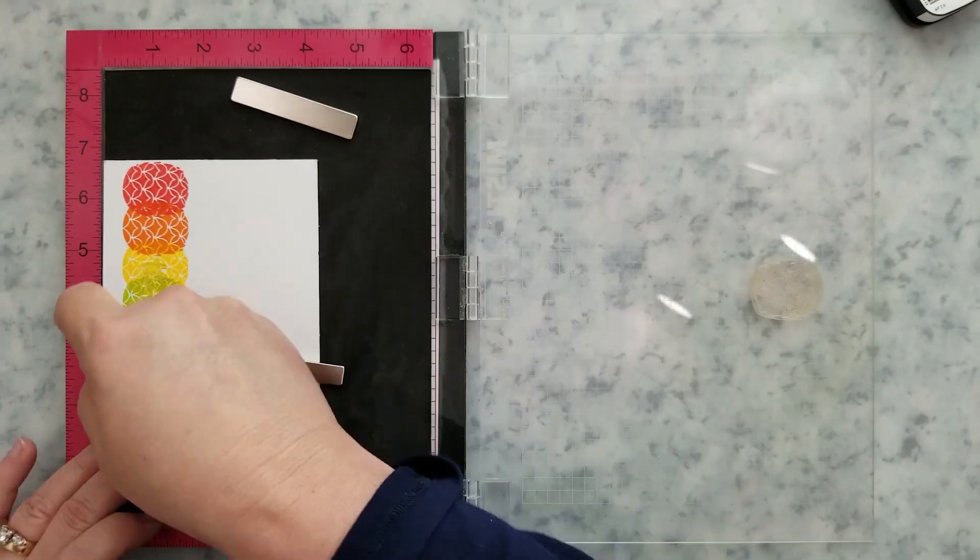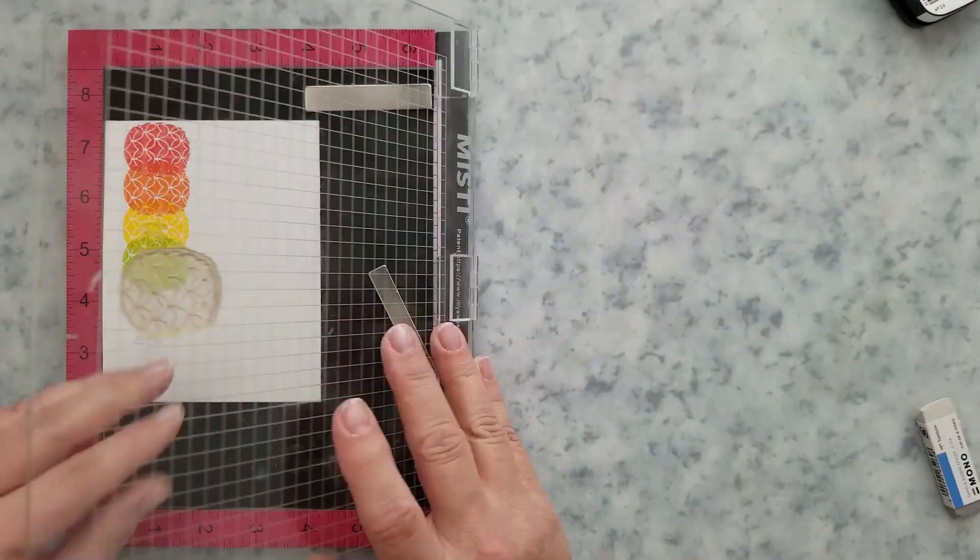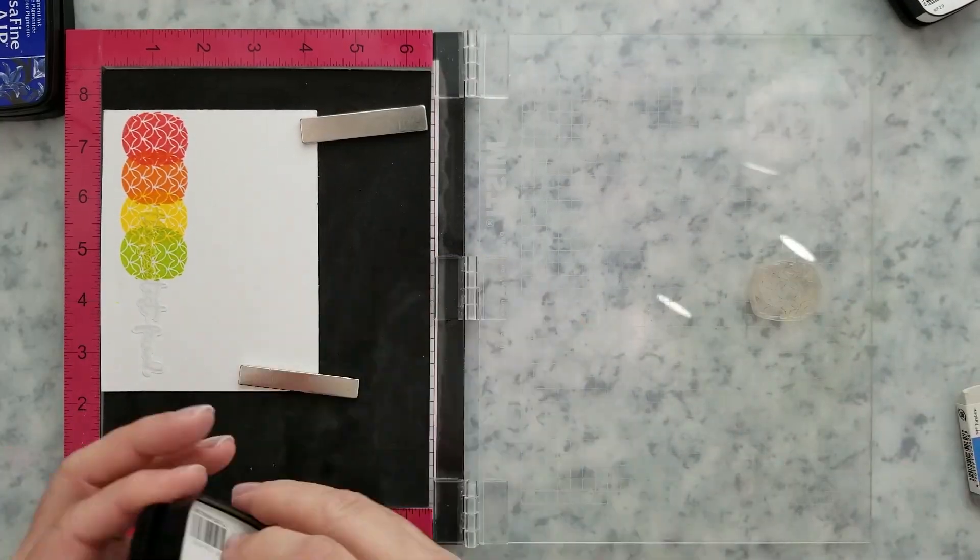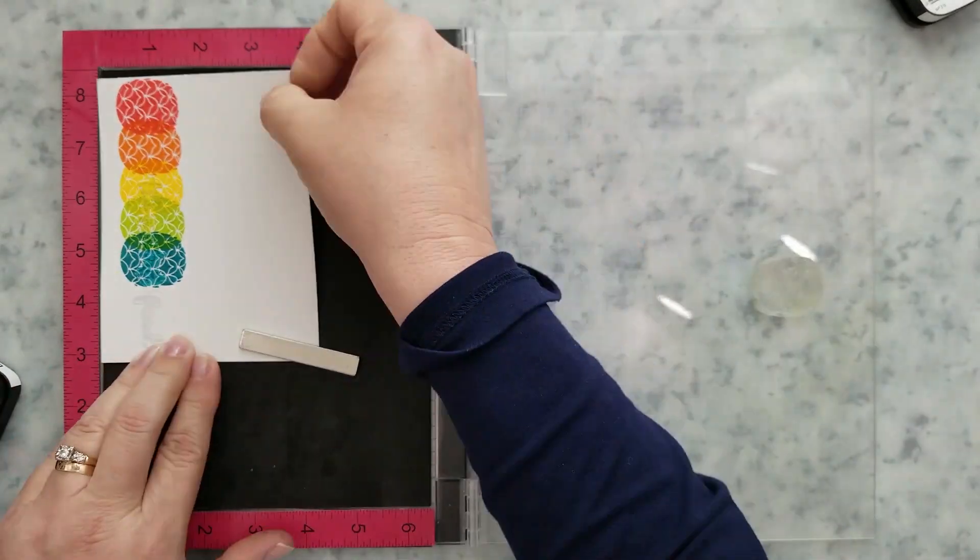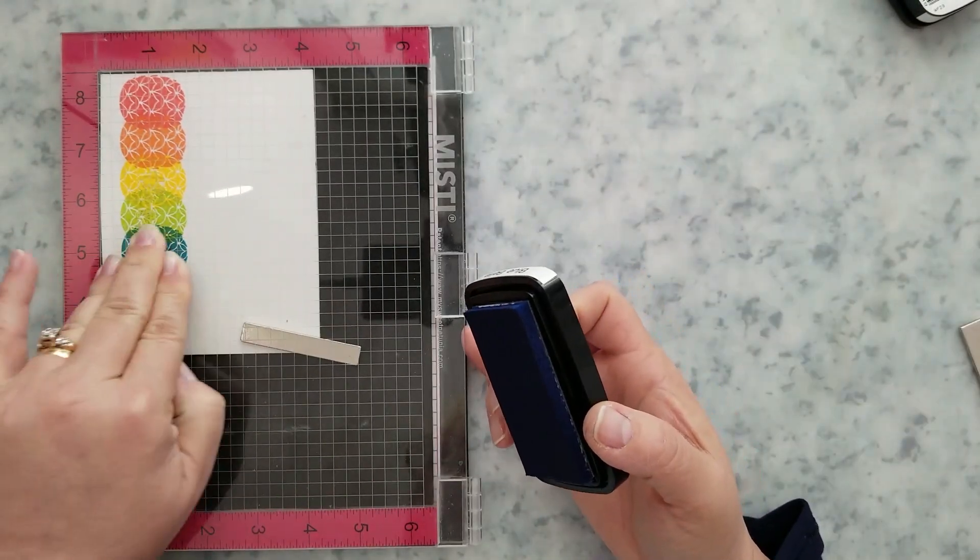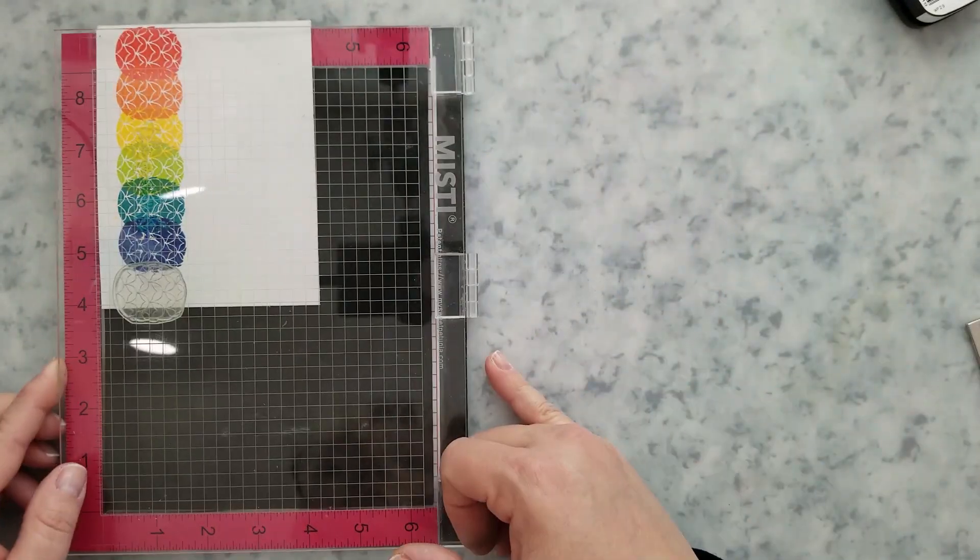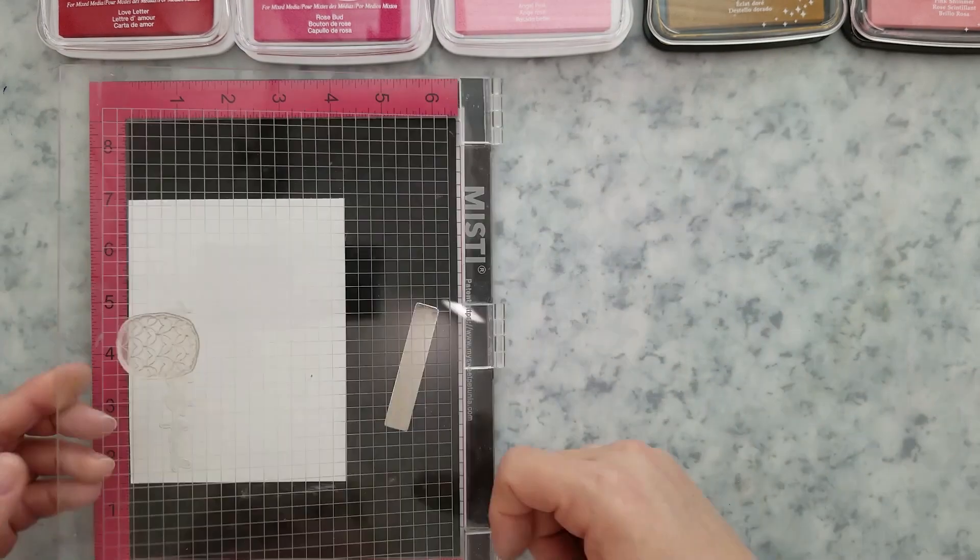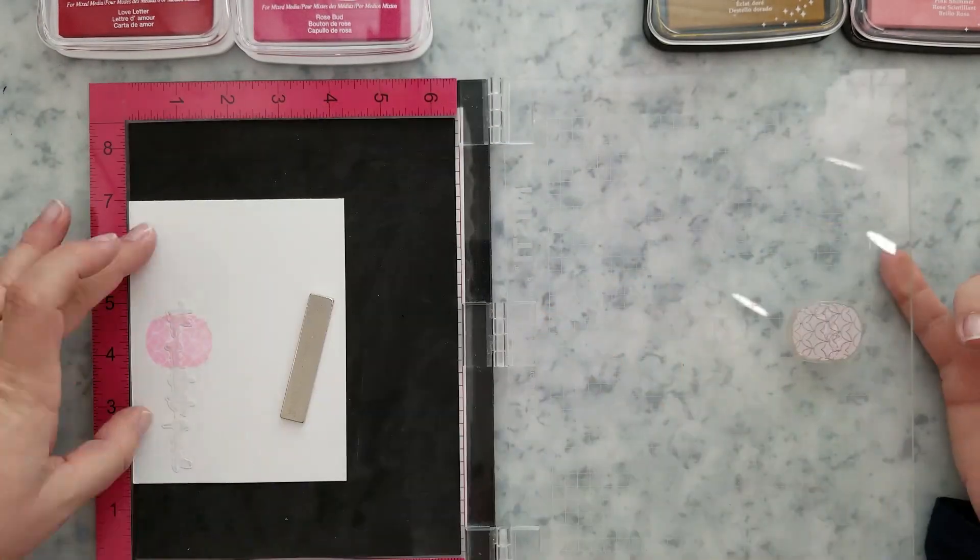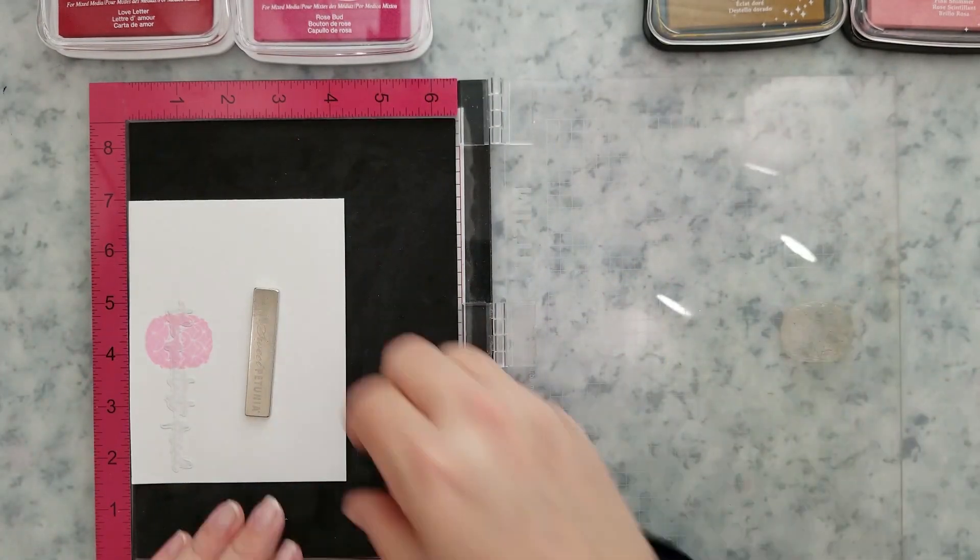Now I created all the cards by doing this repeat stamping like you see me doing here. I love that I was able to use that same process for all the cards, but by simply changing something, whether that was the ink color, the position of the stamped pineapple, or the number of times I stamped it, each card has its own vibe to it.